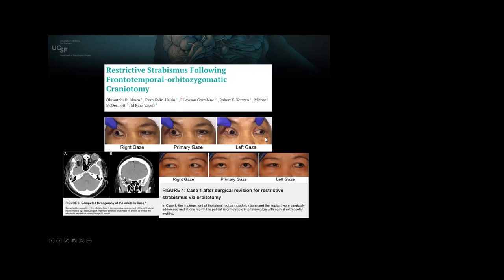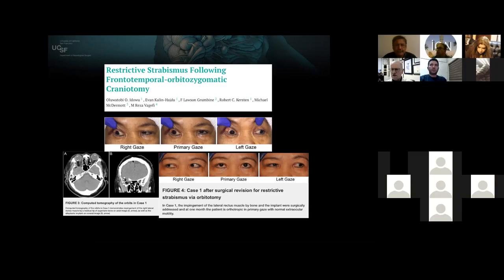Immediately post-op, you can see when the patient attempts to look to the left, the right eye — the operated side — is restricted. On CT scan, the implant was impinging on the lateral rectus. The orbital surgeon did a conjunctival incision and was able to release the muscle and move the mesh out. That's the reason why we do the forced duction test. We do the orbital reconstruction, turn the skin flap back, open both eyes, look at the globe position — it usually takes a couple of maneuvers until you're happy. Then the ophthalmic surgeon does the forced duction test to make sure there won't be restrictive strabismus post-operatively.